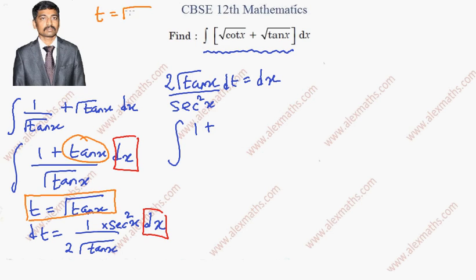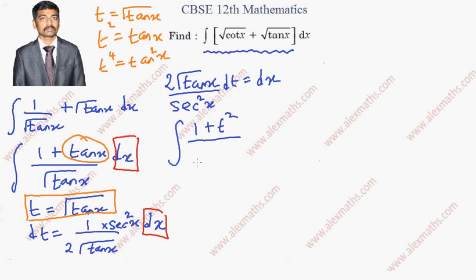For tan x, recall our substitution t = √(tan x), so t² = tan x, and t⁴ = tan²x. So in this expression, tan x is simply t². The denominator is t, so we have (1 + t²) / t.